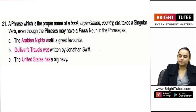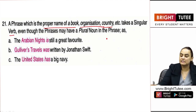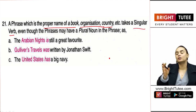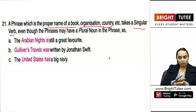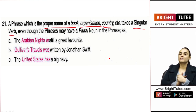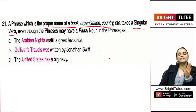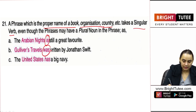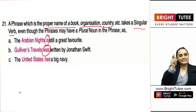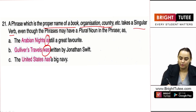The next rule says a phrase which is the name of a book, organization, or country will always take a singular verb, even if it has a plural noun in it. For example: 'the Arabian Nights' — 'nights' is plural but it is the name of a book, so 'is.' 'Gulliver's Travels' — 'travels' is plural but it is the name of a book, so 'was.' 'The United States' — 'states' is plural but it is the name of a country, so 'has.'